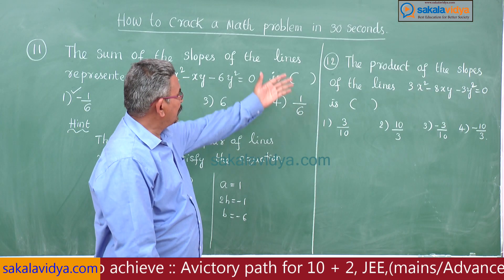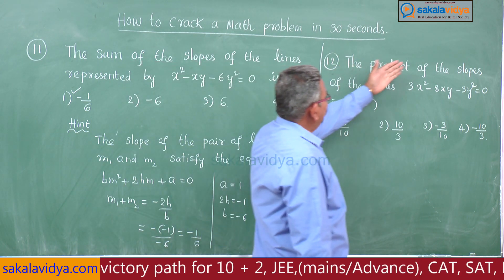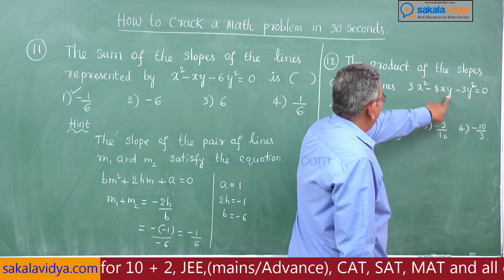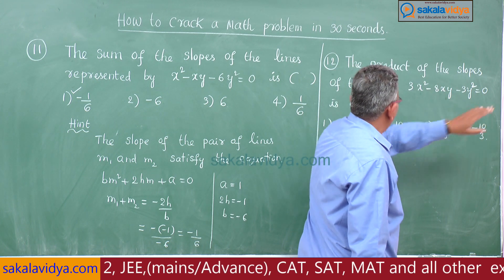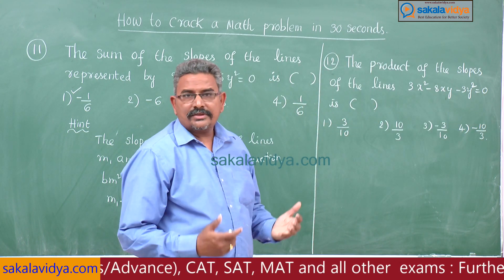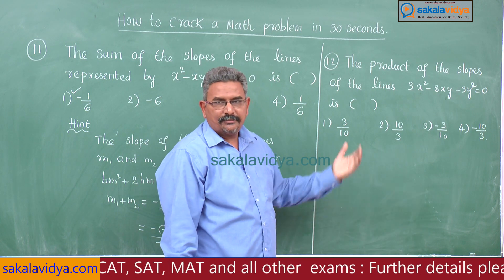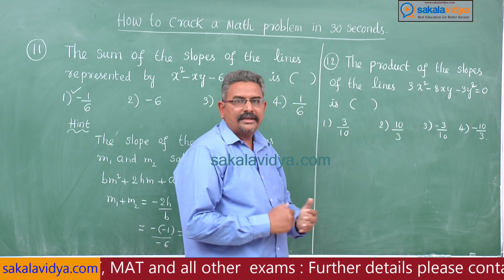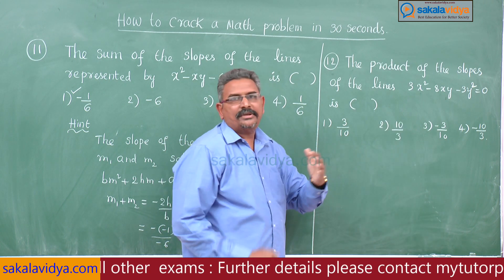Problem 12: The product of the slopes of the lines 3x² - 8xy - 3y² = 0 is — first option 3 by 10, second option 10 by 3, third option minus 3 by 10, fourth option minus 10 by 3.